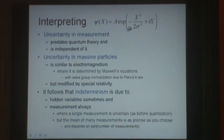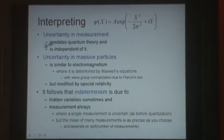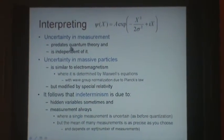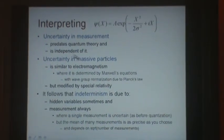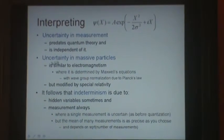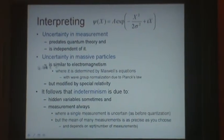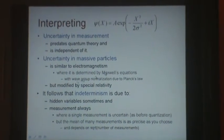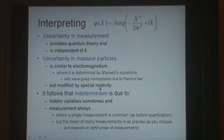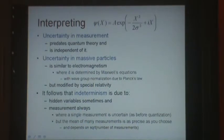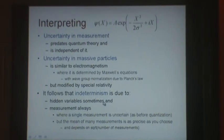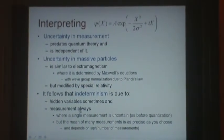So how do we interpret this travelling wave function? Firstly, uncertainty in measurement predates quantum theory and is independent of it. Secondly, uncertainty in massive particles is similar to electromagnetism but modified by special relativity. And thirdly, it follows that indeterminism is due to hidden variables sometimes and measurement always.